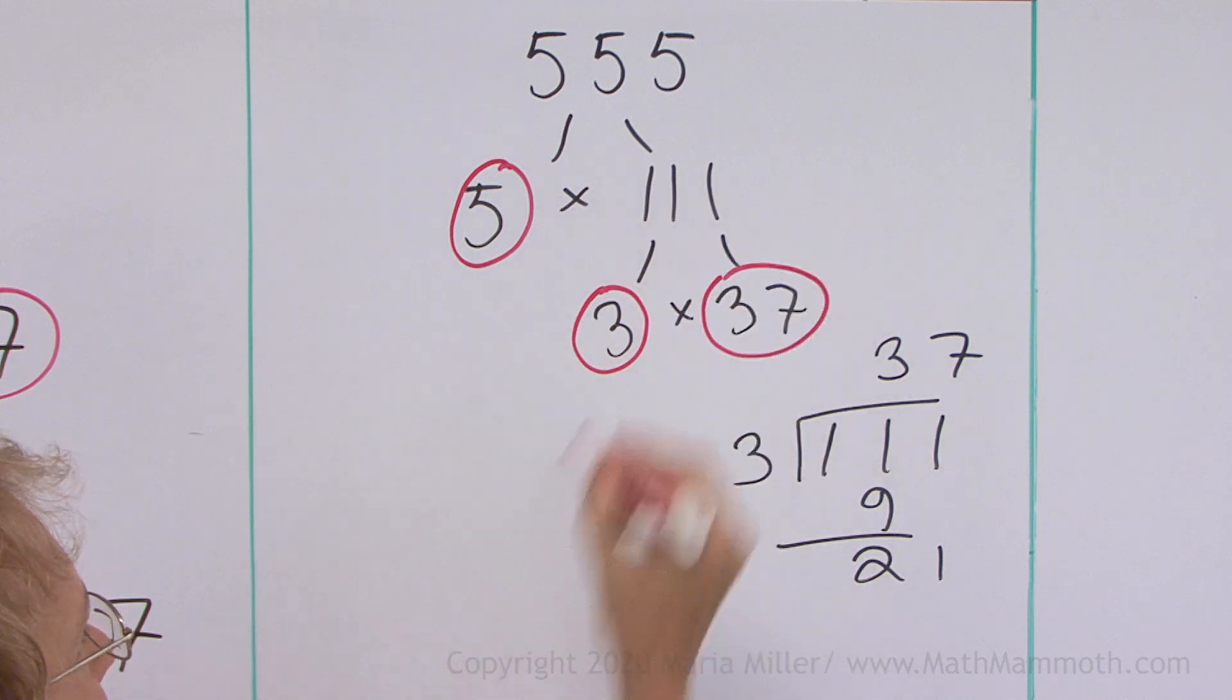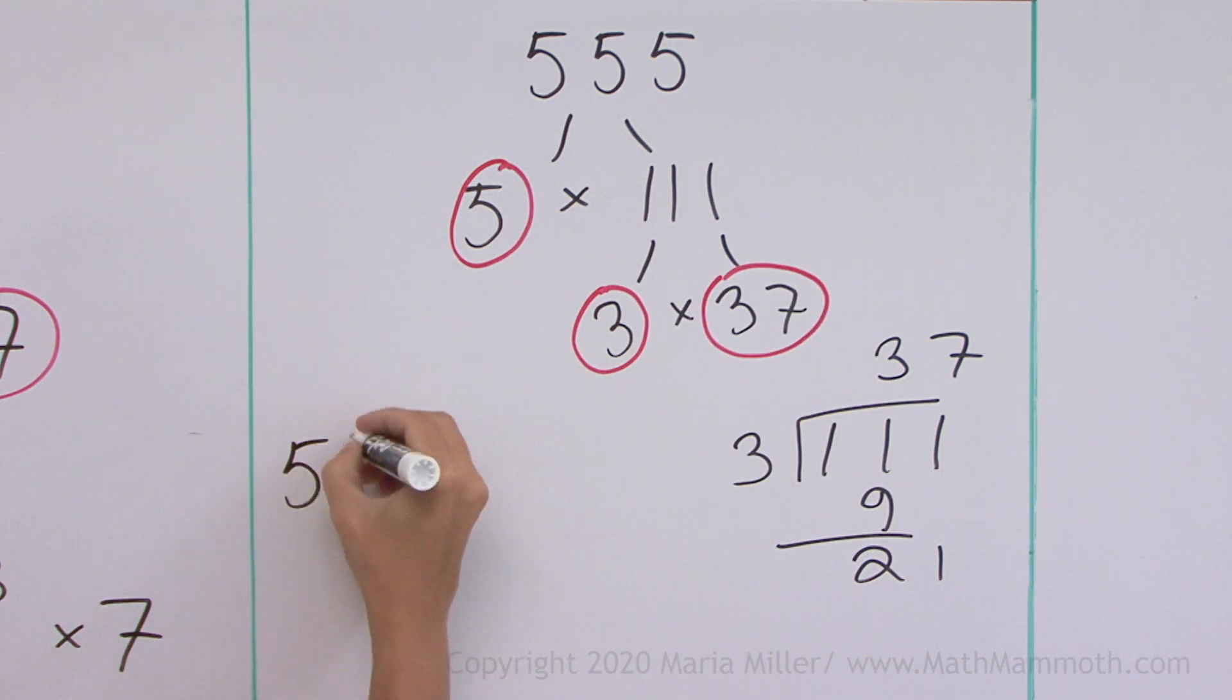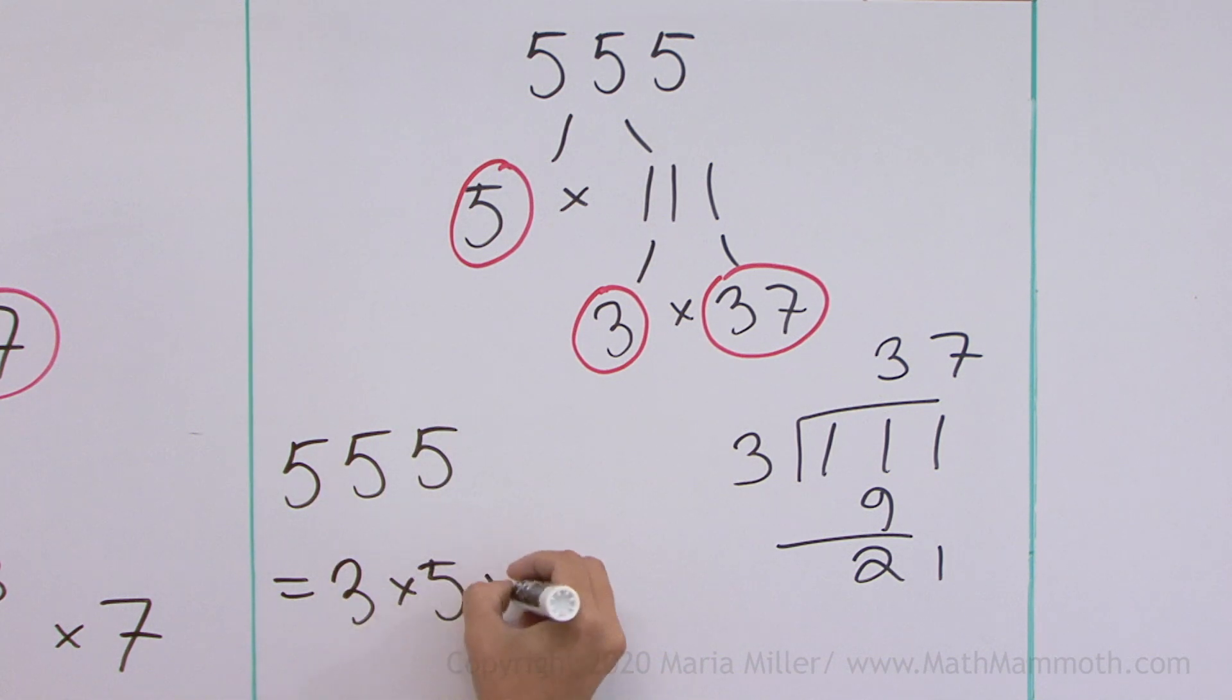3 and 37 are the prime factors. And we can write 555 equals 3 times 5 times 37.